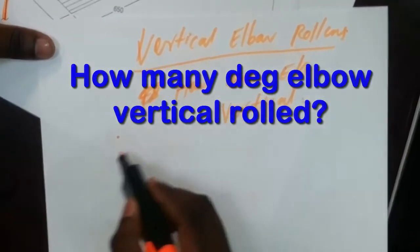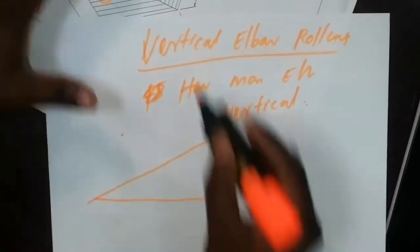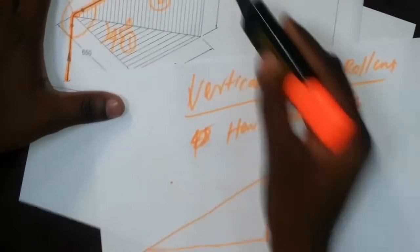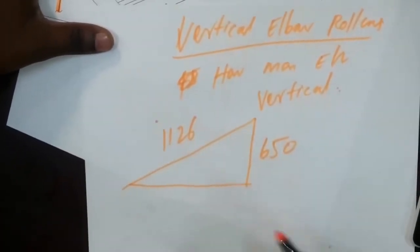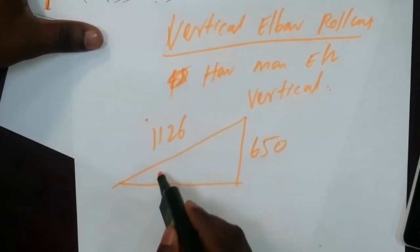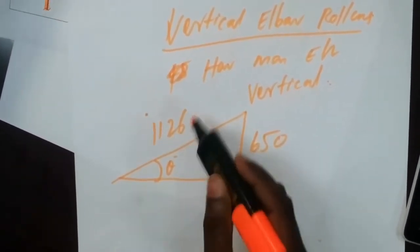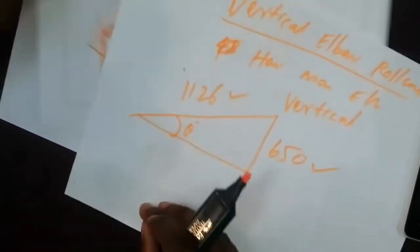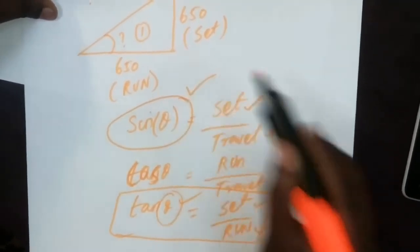Next, we take triangle number two for calculating the vertical elbow rolling — meaning how many degrees we have to cut the elbow vertically. In this triangle, we have 650mm as the set and 1126mm as the travel. Since we know the set and travel, we will apply the sin theta formula.